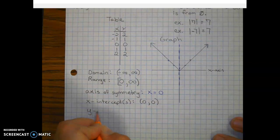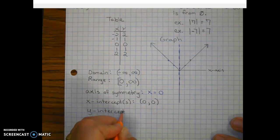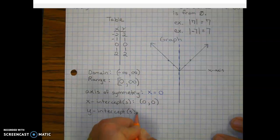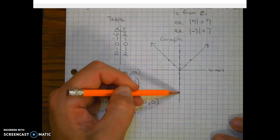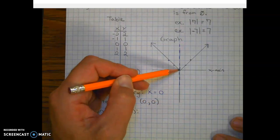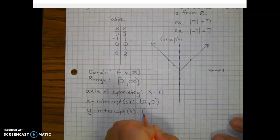Y-intercept. So we go on the y-axis to see where it crosses or touches the y-axis. And again, it's the same point. In this case, it's zero, zero.